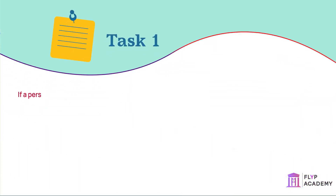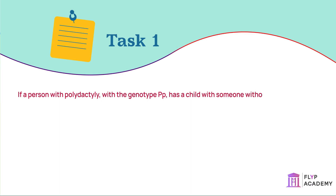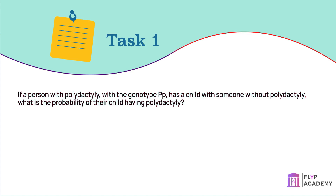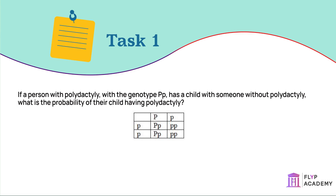Task: If a person with polydactyly with the genotype Pp has a child with someone without polydactyly, what is the probability of their child having polydactyly? A Punnett square should be drawn to determine the possible offspring genotypes, then those with polydactyly identified and the probability calculated. Out of the four possible offspring, two have the genotype Pp, so the probability is 2/4 × 100 = 50%.